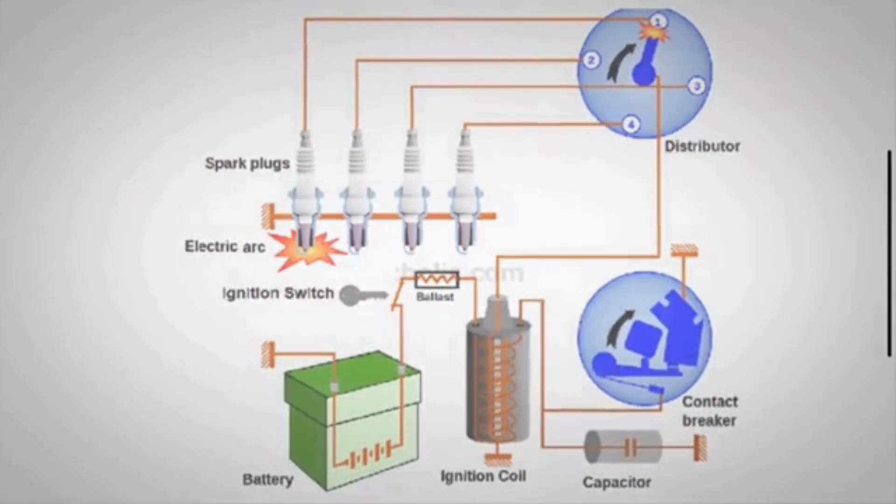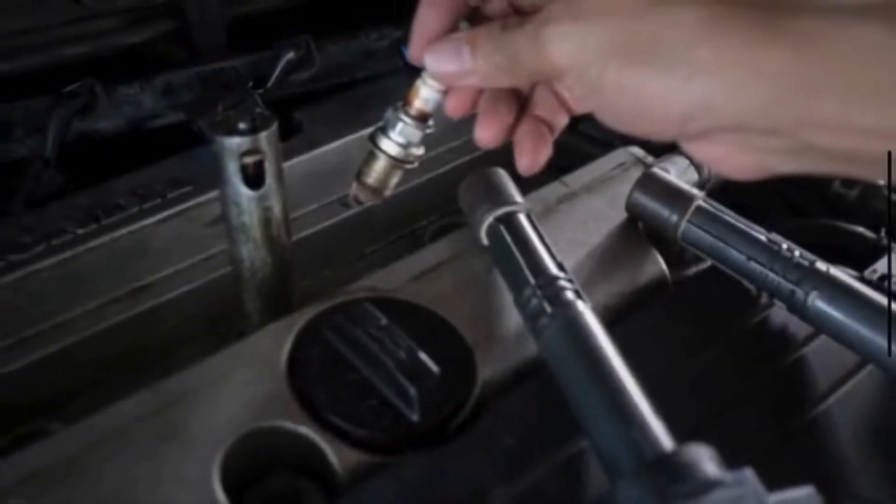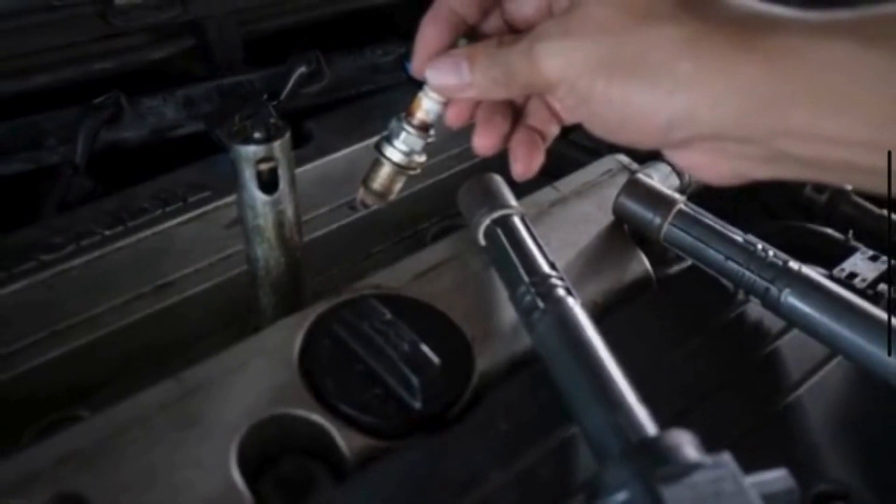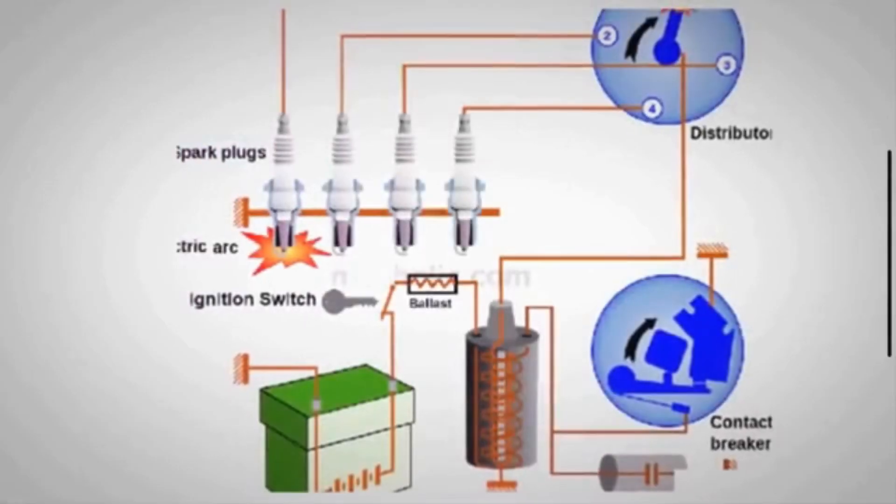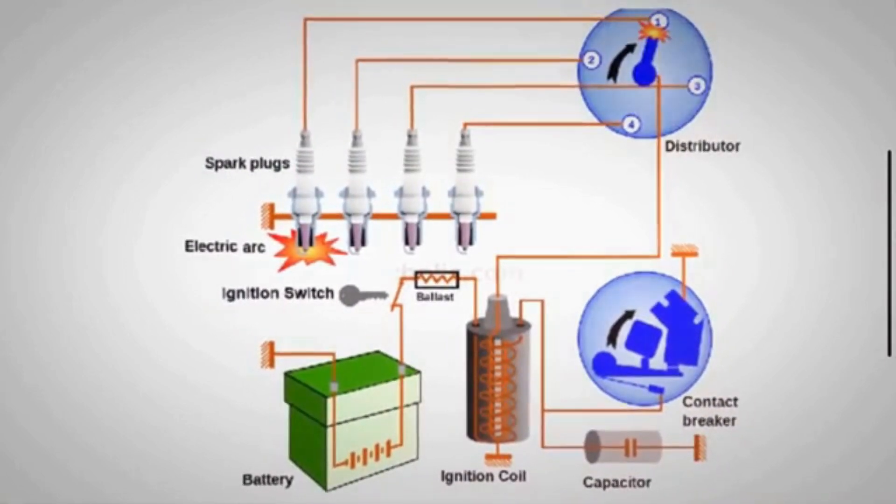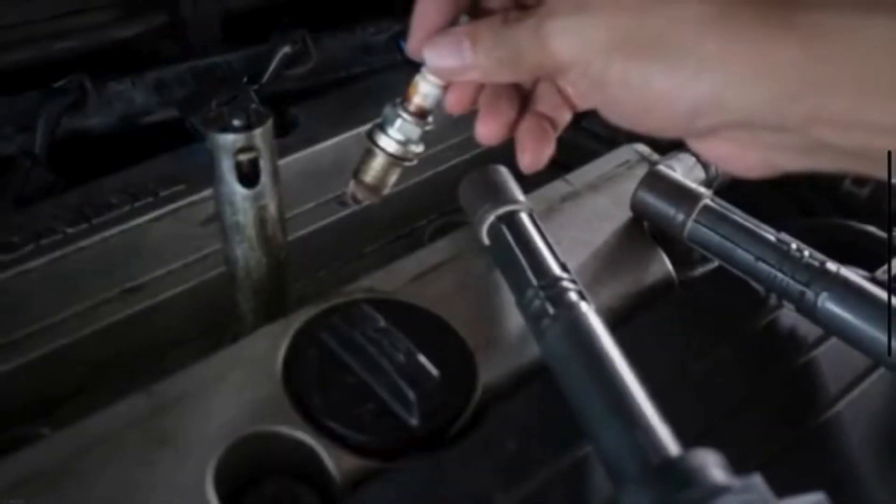On older vehicles, the ignition coil is positioned between the battery and a distributor. On modern vehicles, the ignition coil is located near or directly over each spark plug. This setup is called coil-on-plug.